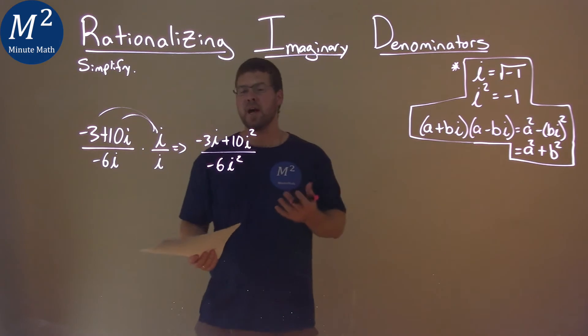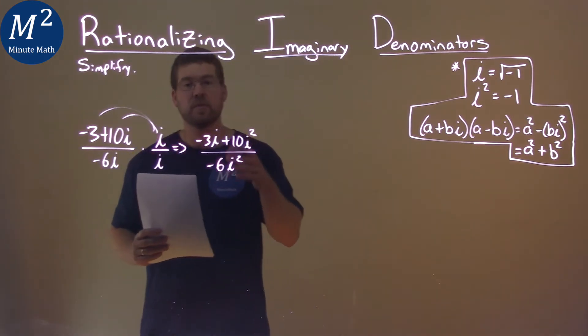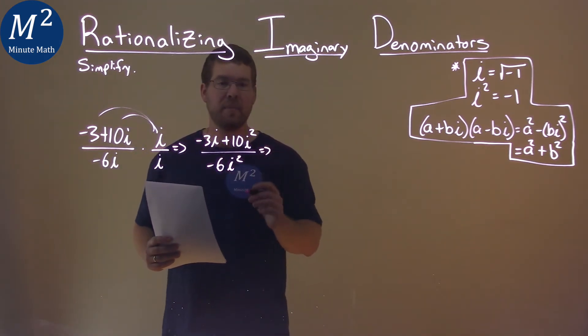And what do I mean by getting it out of the denominator? We know i squared is equal to negative 1. And so now by doing that,